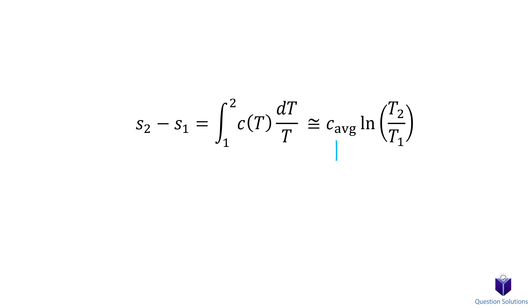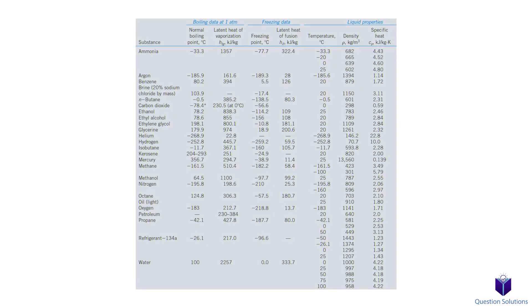Here, C average is the average specific heat of the substance over a given temperature interval. This value is usually given on tables at the back of your textbook, or you can easily find them using a search engine.